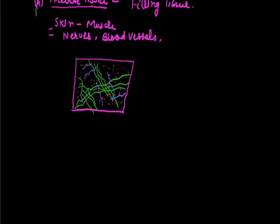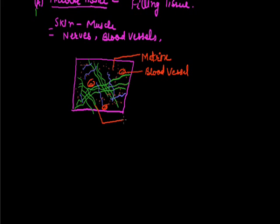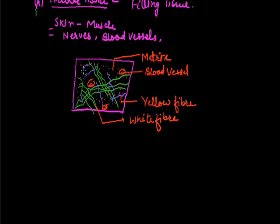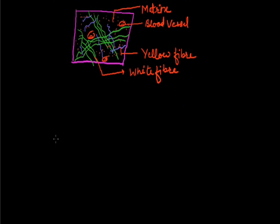Some blood vessels are also found in Areolar Tissue. Unlike epithelial tissue, blood vessels are clearly present in connective tissue. The green-colored fibers represent white fibers, while the purple-colored fibers represent yellow fibers. These fibers arrange to form large vacant spaces, which is why this is called Areolar Tissue. It is found between the skin and muscles, around blood vessels, around nerves, and in bone marrow.